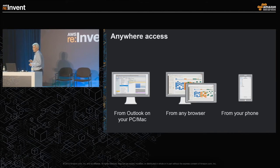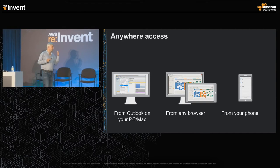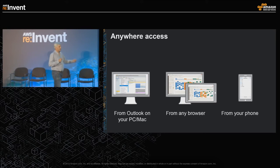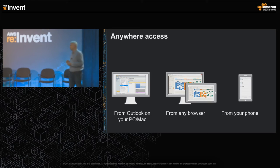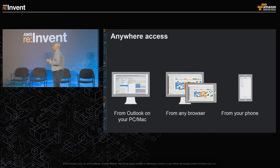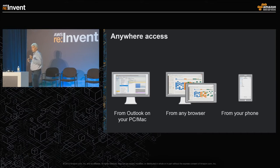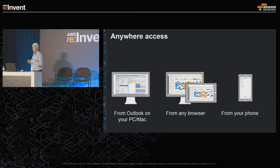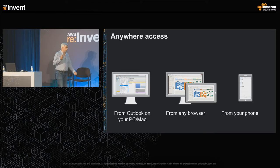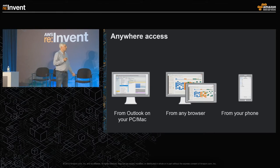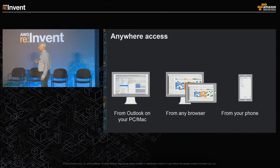Email and calendars need to be available wherever you are — on your desktop, tablet at home, or on your phone on the go. Amazon WorkMail allows you to access your calendars and email from Outlook on PC or Mac, from any modern browser through the web application, and via mobile. We natively support iOS, Windows Mobile, and Android devices.